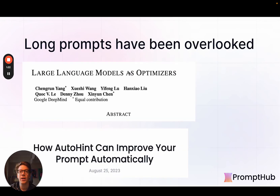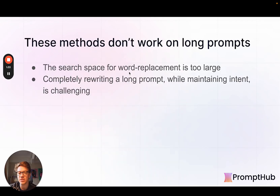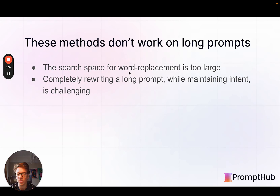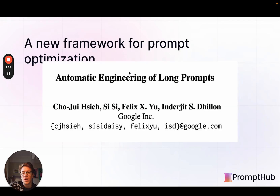There's been a lot of research into how to optimize prompts and prompt optimizers, but they're mostly suited for short prompts and just don't work well on large prompts. That's because they usually focus on some sort of word replacement, and for long prompts the search space is just too large. Or these prompt optimizers work on completely rewriting a prompt, which isn't feasible for a long prompt — it's hard to maintain coherence, clarity, and intent. It's really important that when your prompt is optimized, you're left with something that looks and sounds familiar.